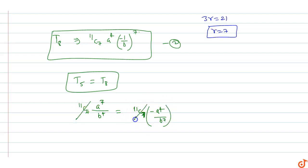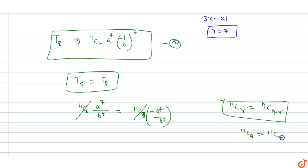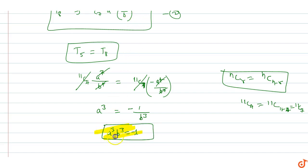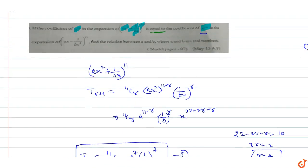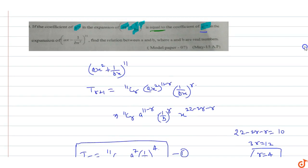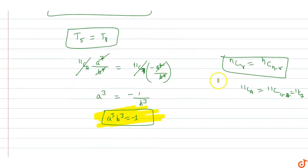Now 11C4 = 11C7 (since nCr = nC(n-r)), so they cancel. Then a^4 cancels from both sides and b^4 cancels, giving a^3 = -1/b^3, so a^3 · b^3 = -1. Therefore the relation between a and b is a³b³ = -1.